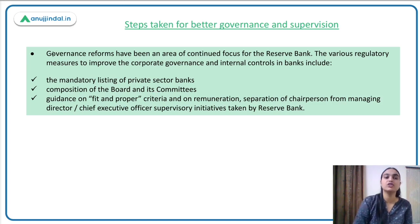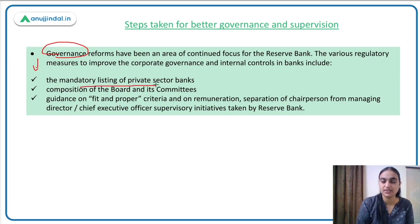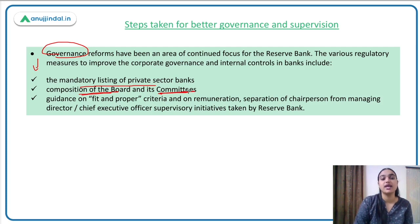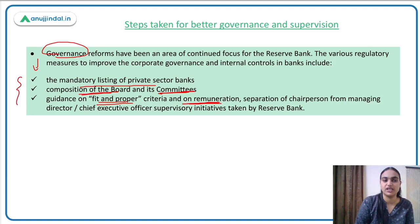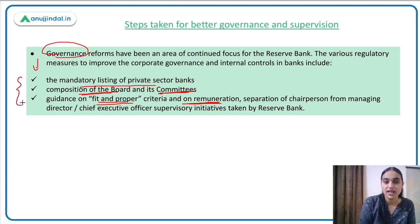RBI has taken several steps to enhance governance. It has mandated the listing of private sector banks, issued rules on board composition and committee structures, provided guidance on fit and proper criteria, addressed remuneration of bank management, and mandated the separation of the roles of Chairperson and MD/CEO. These are some of the key governance initiatives taken by RBI to enhance oversight of private sector banks.